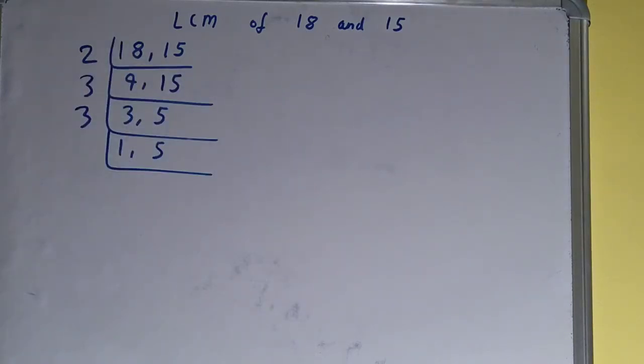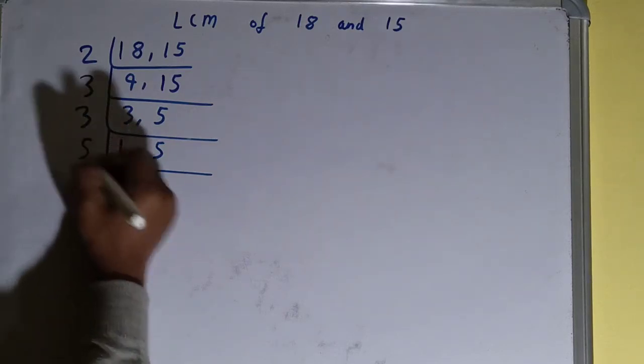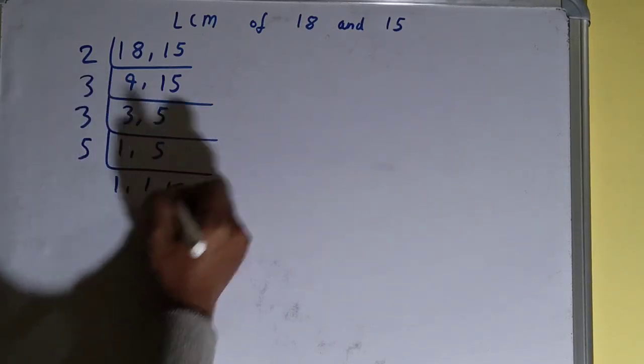Okay, now again we'll check: is any of the numbers divisible by 3? None of the numbers, so we'll go to the next prime number, that is 5. And with 5, the second number is divisible, so we'll divide and we'll be having 1 comma 1.